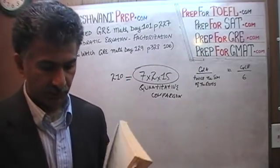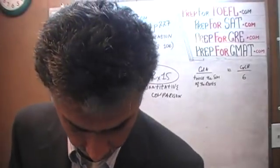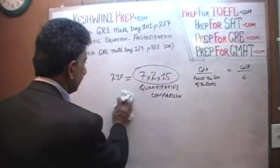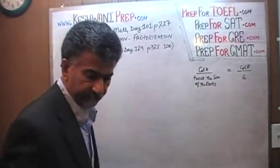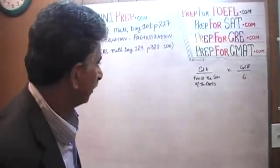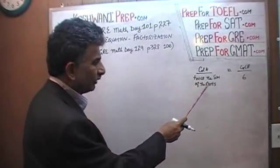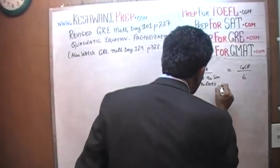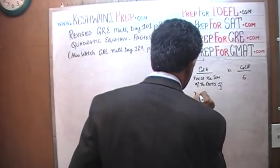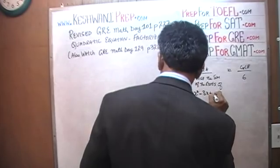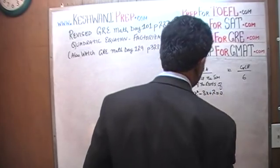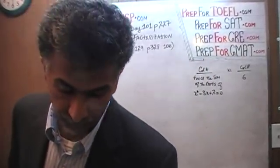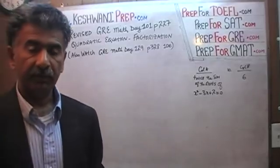You will find them on my channel if you are interested in practicing more. Now, the question is right here: in Column A we are given twice the sum of the roots of x² − 3x + 2 = 0, versus 6 in Column B. Our job is to figure out which quantity is bigger, or if they are equal.